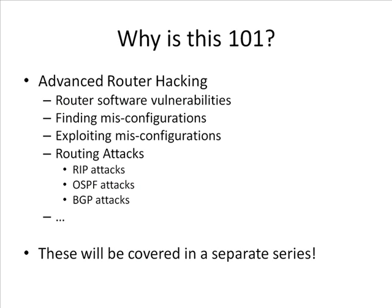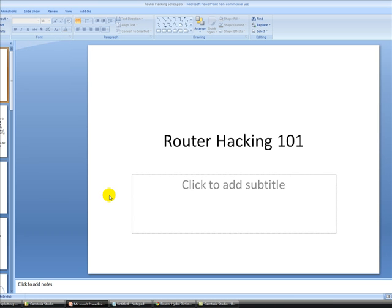The final thing I would like to mention in this introductory presentation is that this is just 101. Advanced router hacking consists of finding and exploiting router software vulnerabilities, finding and exploiting misconfigurations, and routing attacks which include RIP attacks, OSPF and BGP attacks, and a host of other things. We will cover this in a later separate series. In the next video we will look at how to go ahead and launch the attacks we have been talking about. Thank you.